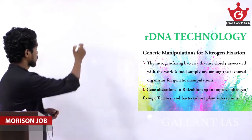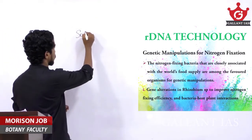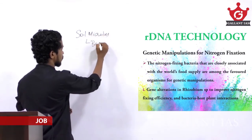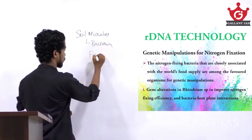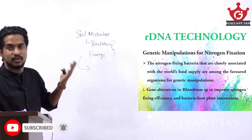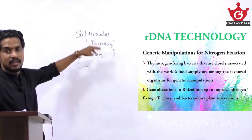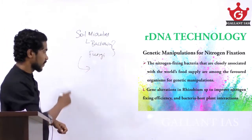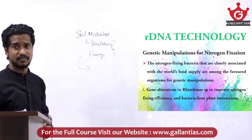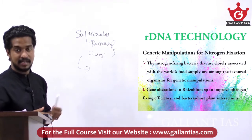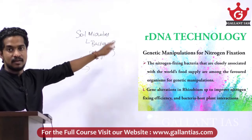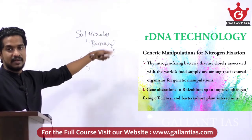We have discussed about soil microbes — bacteria and fungi — and how these microbes help in maintaining soil fertility. We have gone through examples of that, and next we are discussing about DNA technology that can be used with the help of bacteria for the better growth and development of agricultural crops.